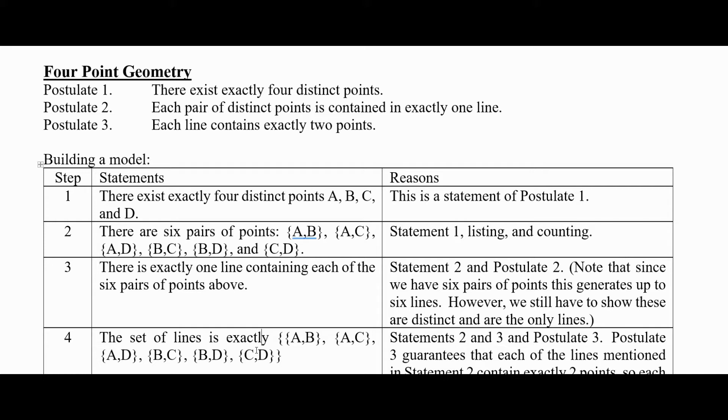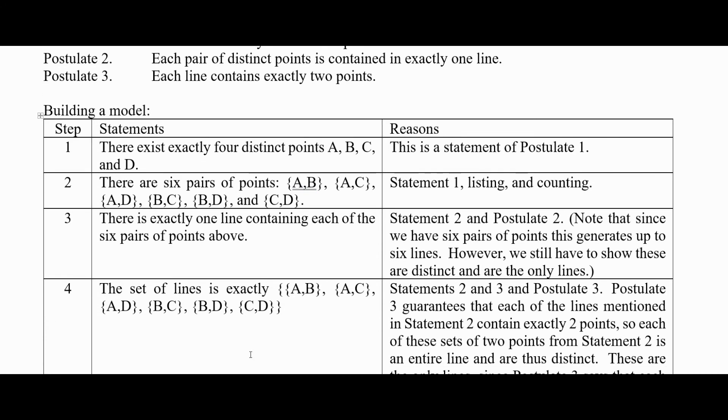So we're going to claim that the set of lines is exactly these six sets of two points. Why is that? Statements 2 and 3 said there are six sets of two points and that there's a line containing each of them. Now, the question is, could the lines contain any more or could there be lines with fewer points? So we have to eliminate both of those things.